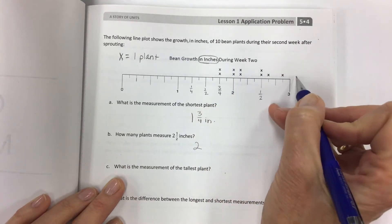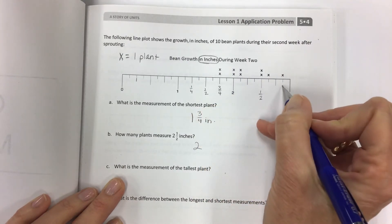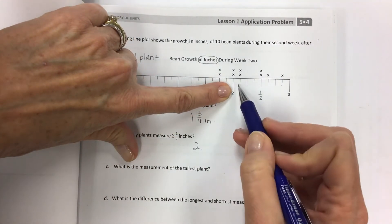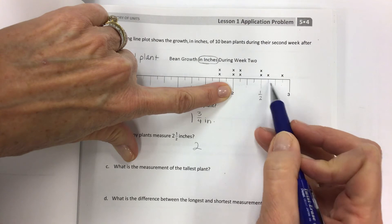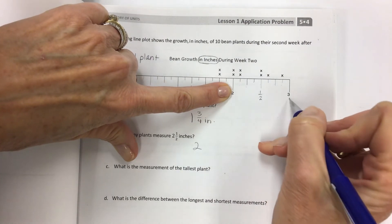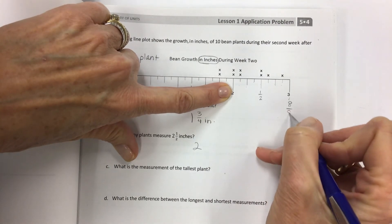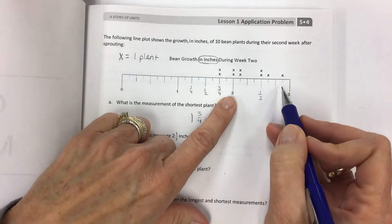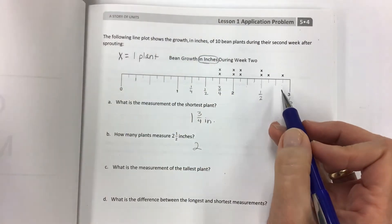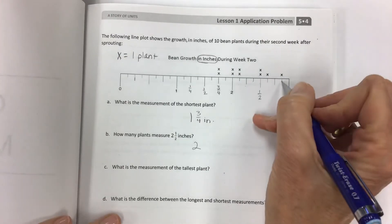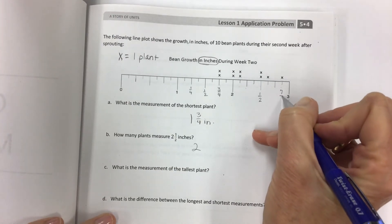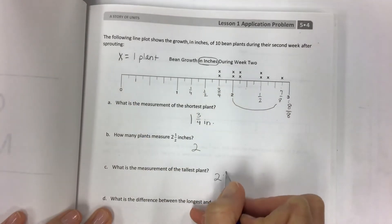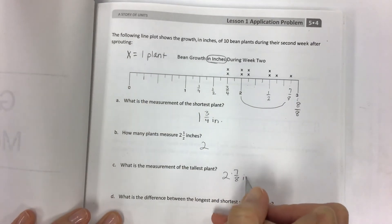What is the measurement of the tallest plant? Go all the way out to the farthest X and it's out here. Now, what is this? Well, how many pieces is this broken into? One, two, three, four, five, six, seven, eight. This is going to be the eighth piece of my number line. So it's like that last model that I had. So if this is eight eighths, this is seven eighths. So it's two and seven eighths inches.